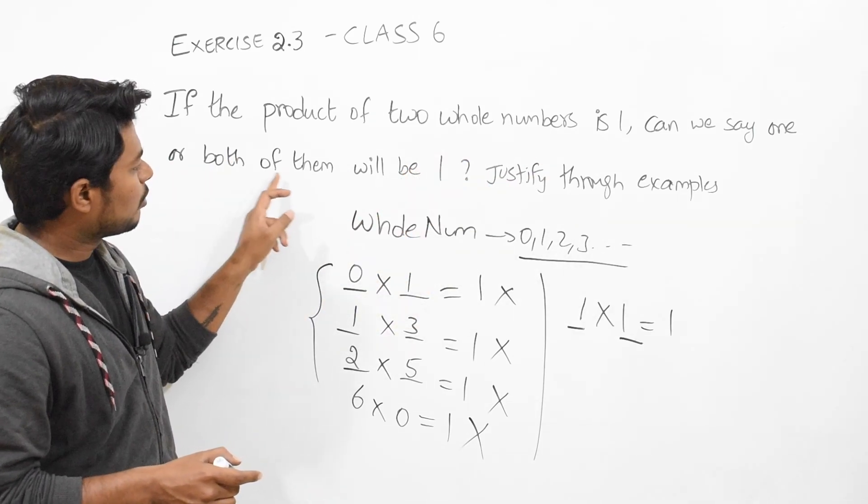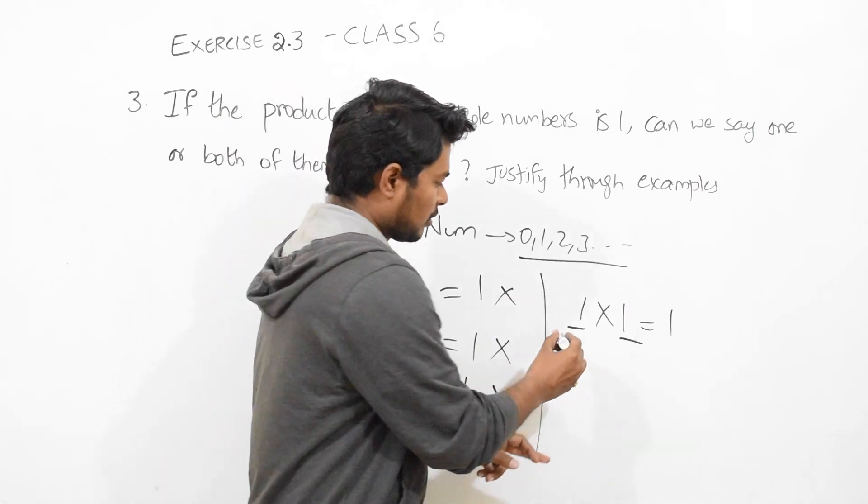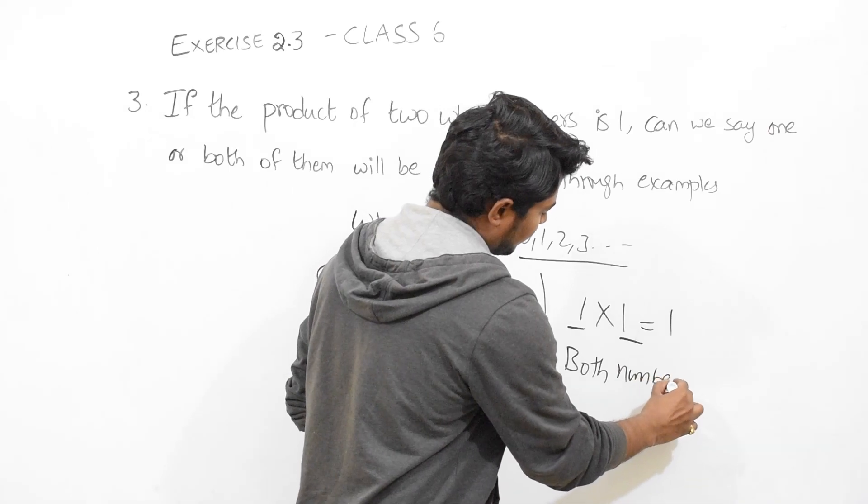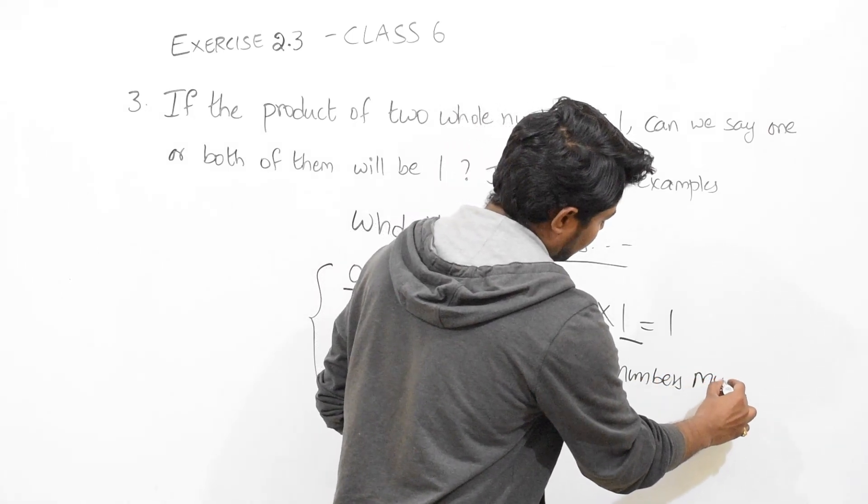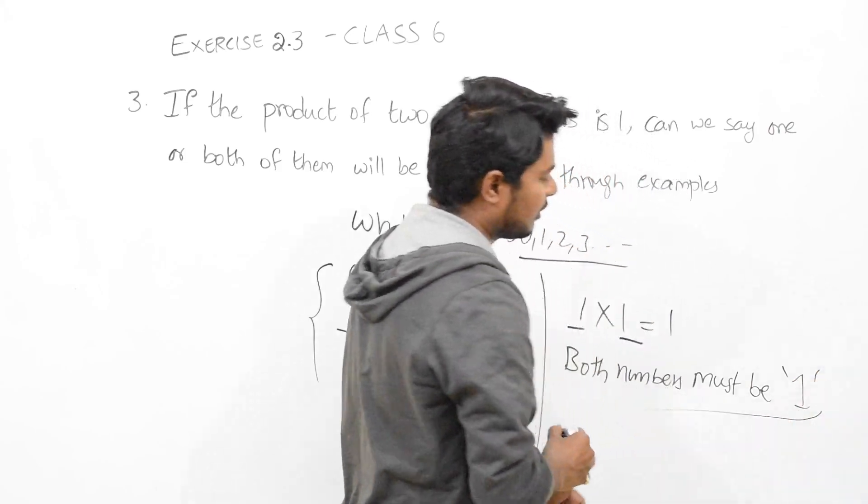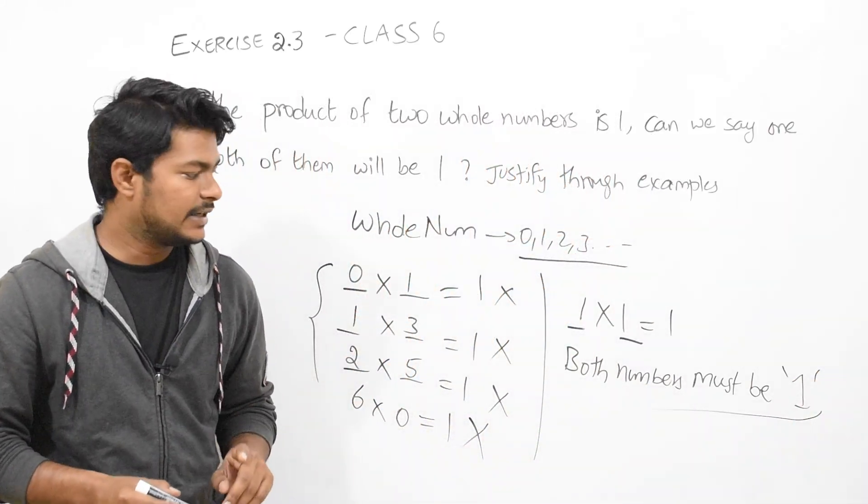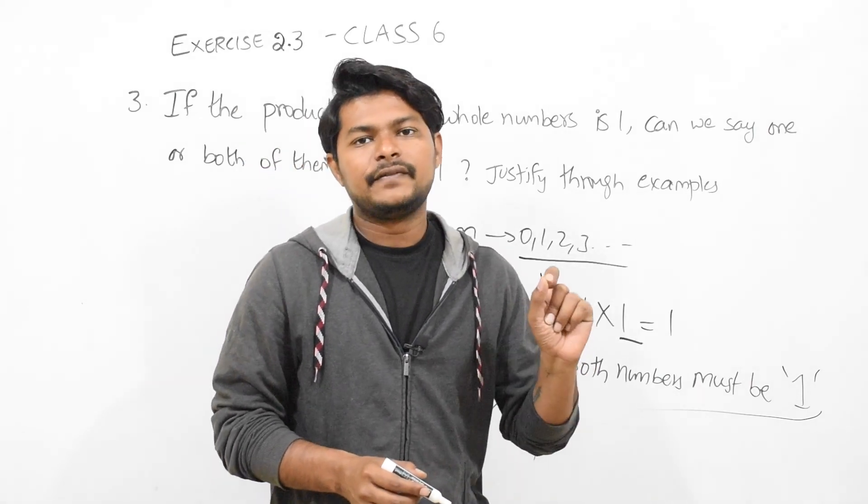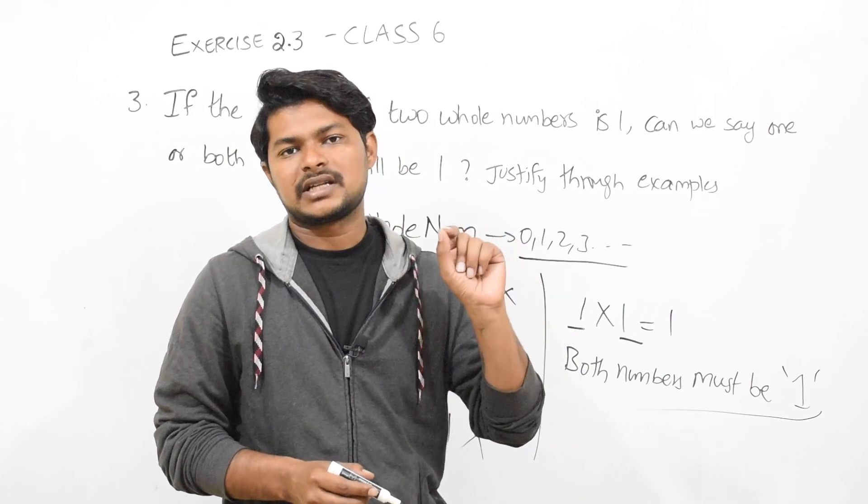Now what they are saying is two numbers multiplied, the answer is one. If the product of two whole numbers is equals to 1, see two whole numbers means any number we can take in this range.